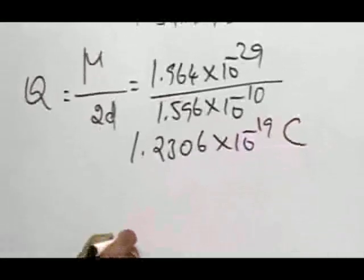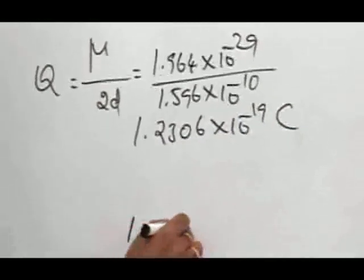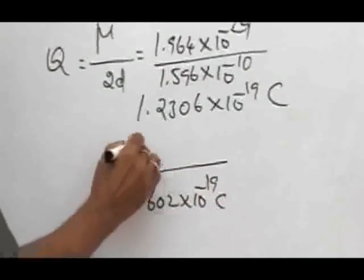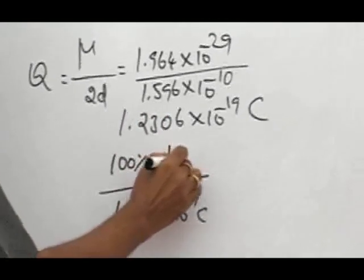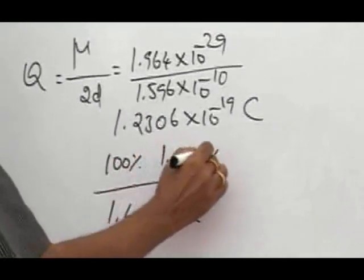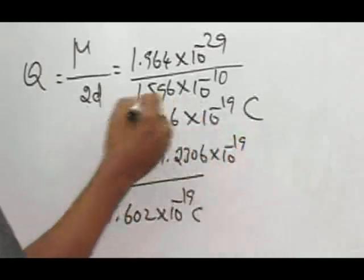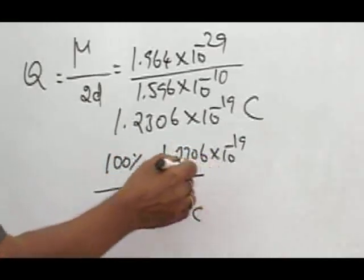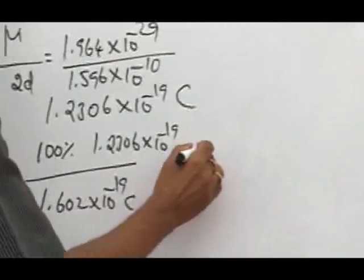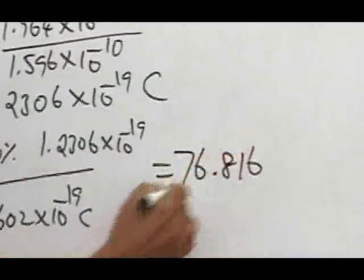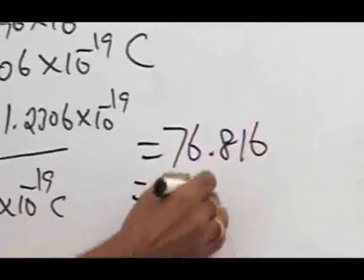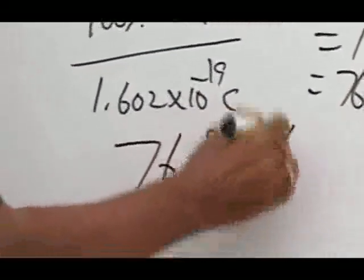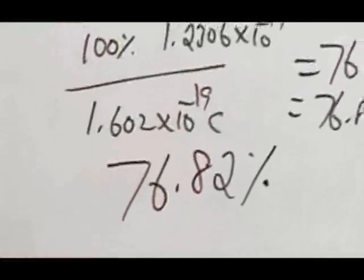If the charge is 1.602 × 10^-19 coulomb, then percentage ionic character will be 100%. Therefore, for 1.2306 × 10^-19 coulomb, what should be the percentage character? When we use this mathematical expression and solve, we have 76.816, which can be rounded up to 76.82%. That is the ionic character in lithium hydride molecule.